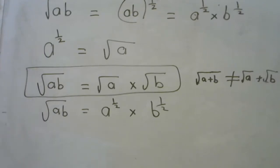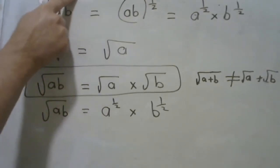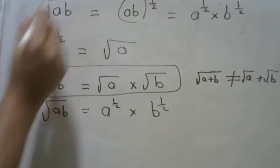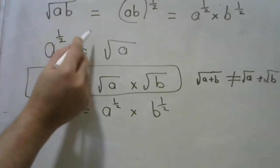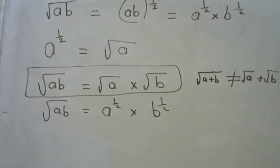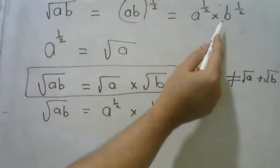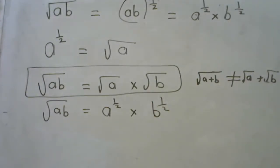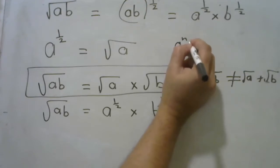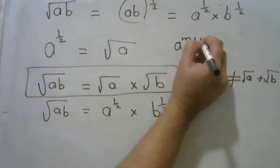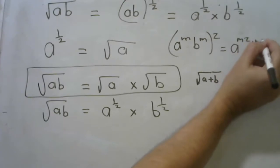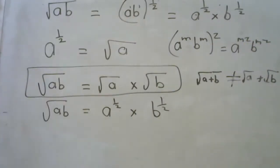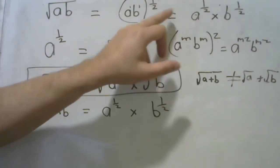So we're clear with this idea — that root ab equals ab to the half power. How do we get that? Remember: a to the m, b to the m, all to the z is the same as a to the mz times b to the mz. So this is like 1 and 1, giving us a to the half times b to the half.